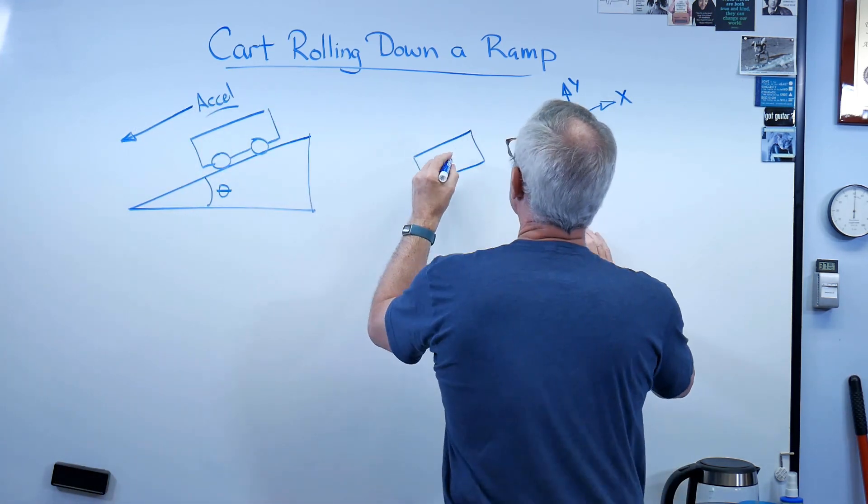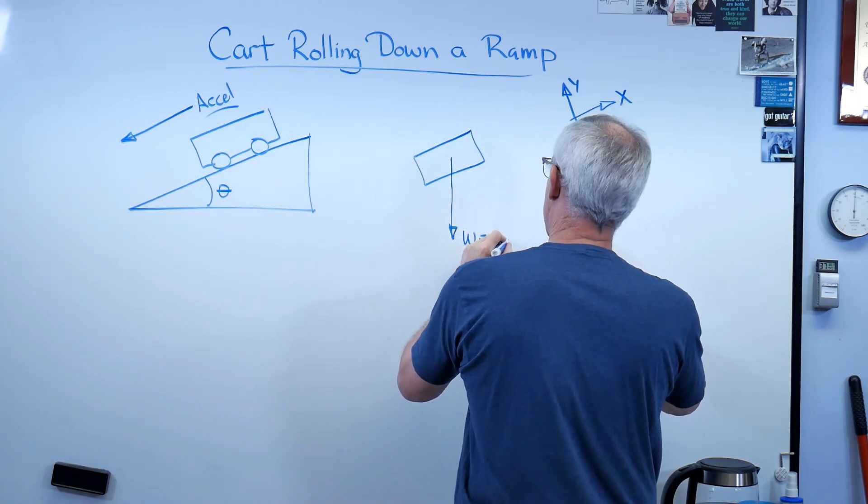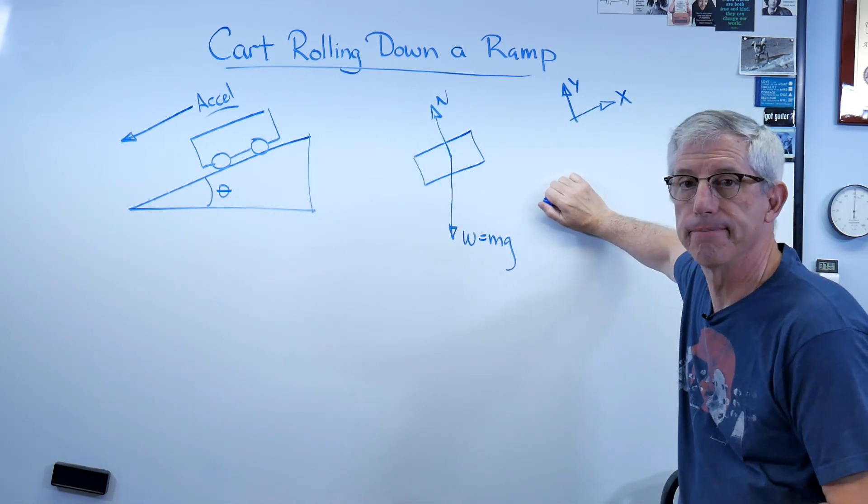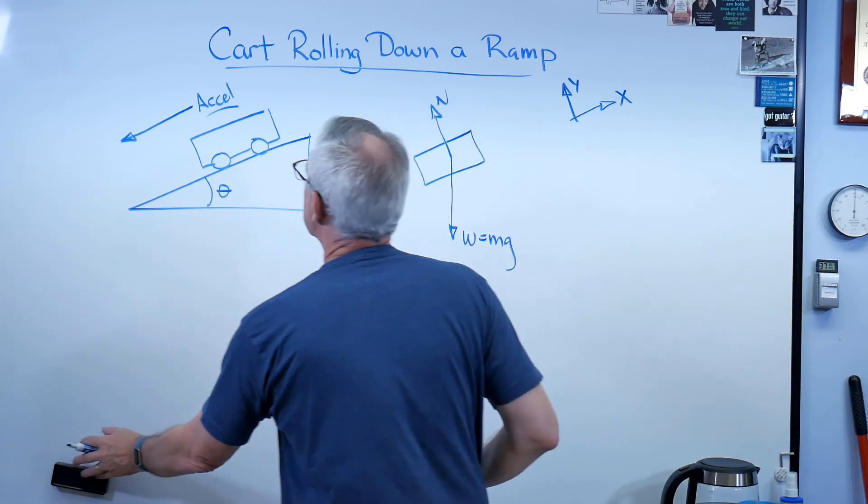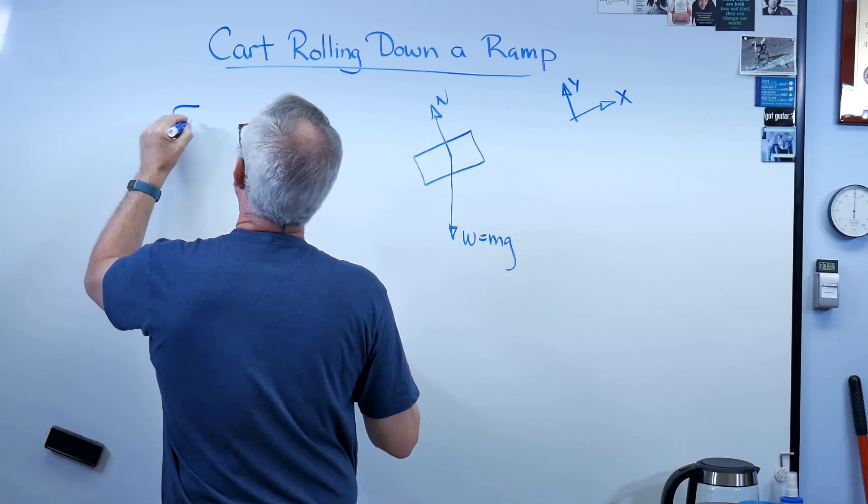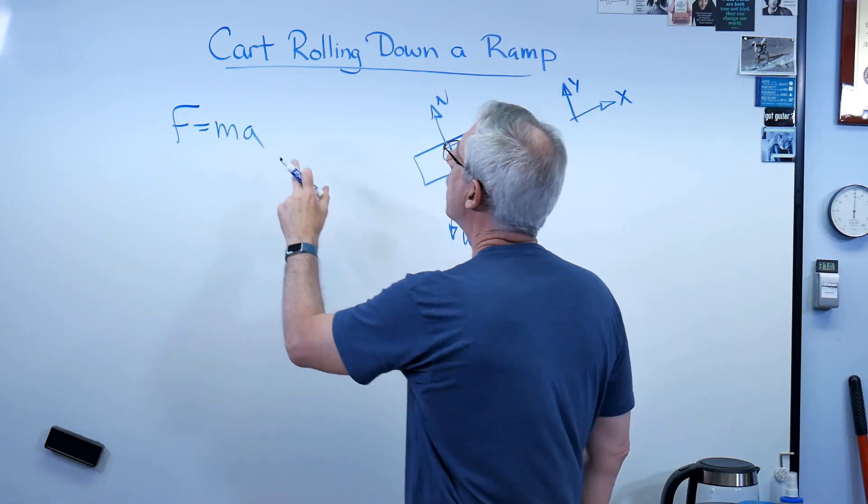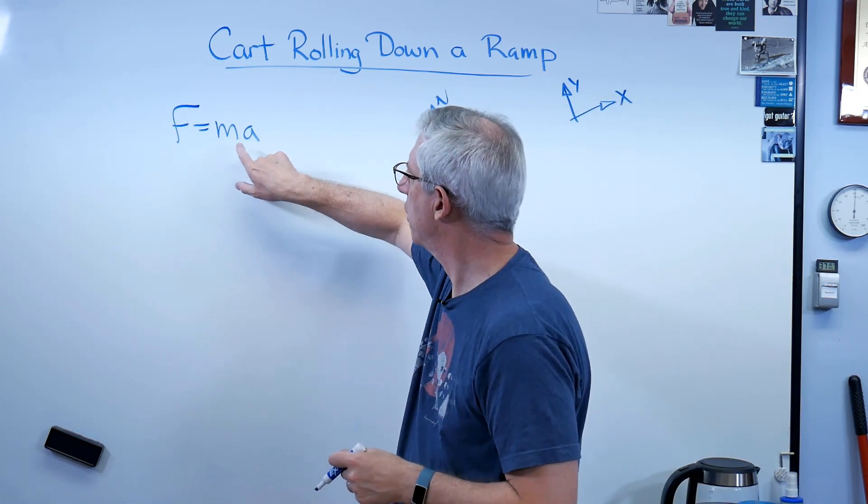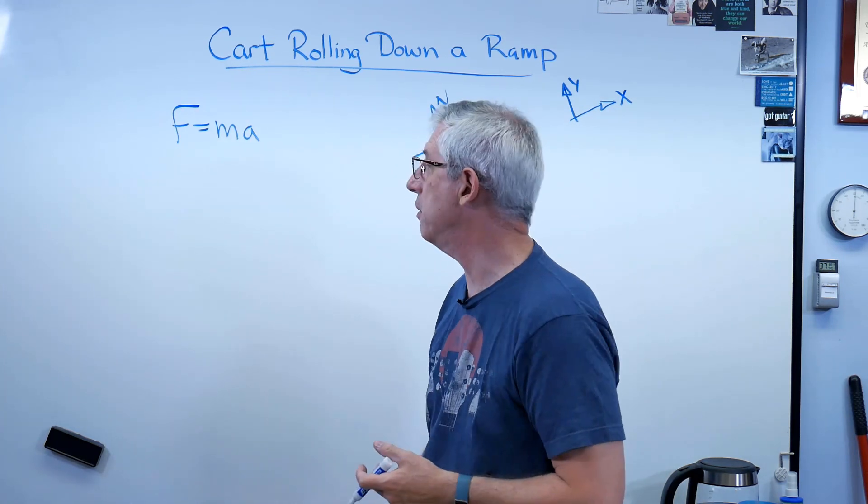Next thing I'm going to do is draw the forces that are at work here. There's weight and that's mg. And there's the normal force perpendicular to the ramp. Anything else? Maybe. I'm going to erase this. And I'm going to write Newton's, I think it's his second law here. F equals ma. Okay, we all know this. One of the things you may not have thought of is ma, it has the units of forces, right? It's kilogram meter per second squared. Well, that's a force. It's on the opposite side of an equal sign from a force. So the units better work out.